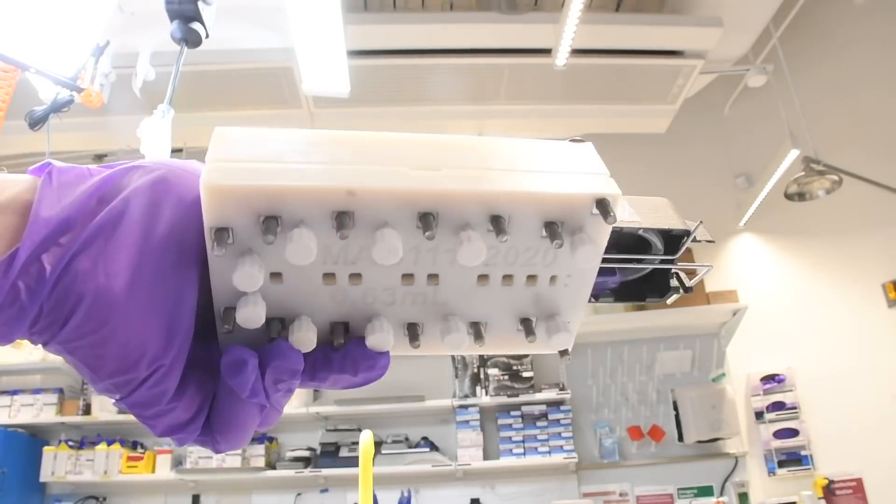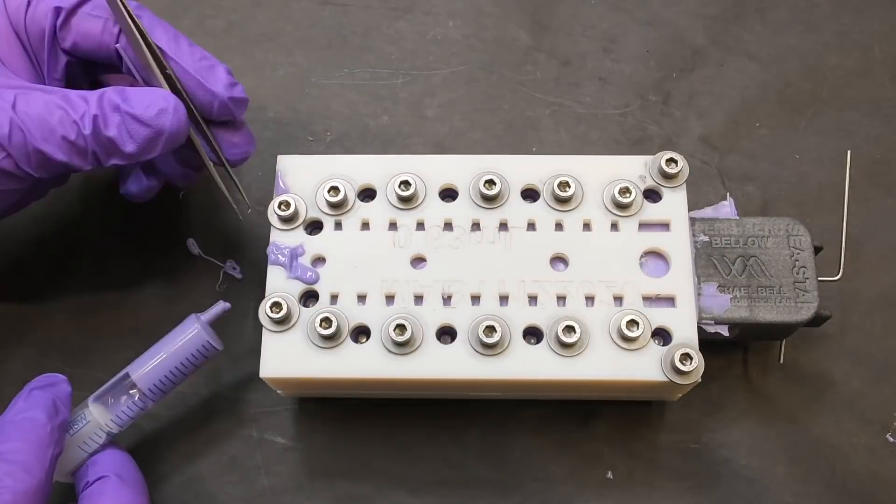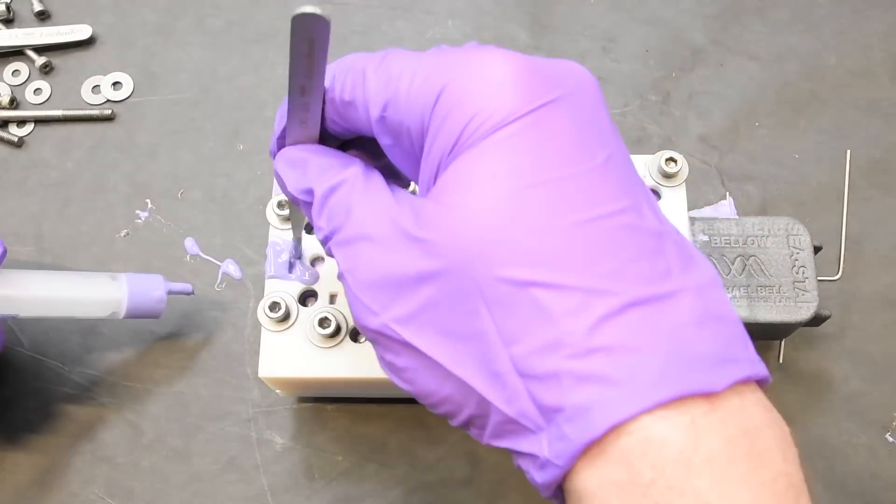We also need to add silicone to the end cap. We do this with a syringe as well, and using a tweezer we get rid of any air bubbles.